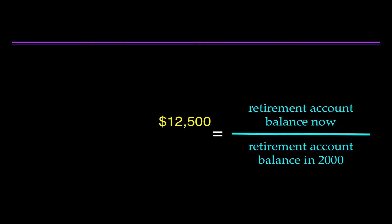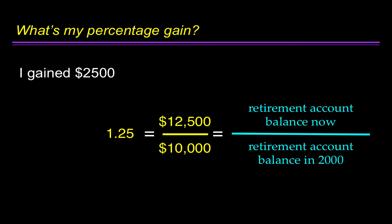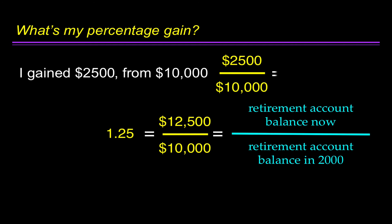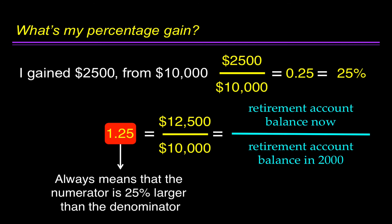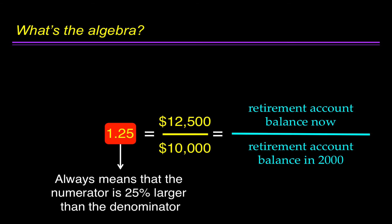Let's say my account balance now is $12,500 and I started with $10,000. That produces a ratio of 1.25. What's my percentage gain? I gained $2,500 from $10,000, so $2,500 over $10,000 is 0.25, or 25%. That information is contained in the ratio of 1.25, which always means the numerator is 25% larger than the denominator. The algebra: 1.25 minus 1 equals 0.25, or 25%.